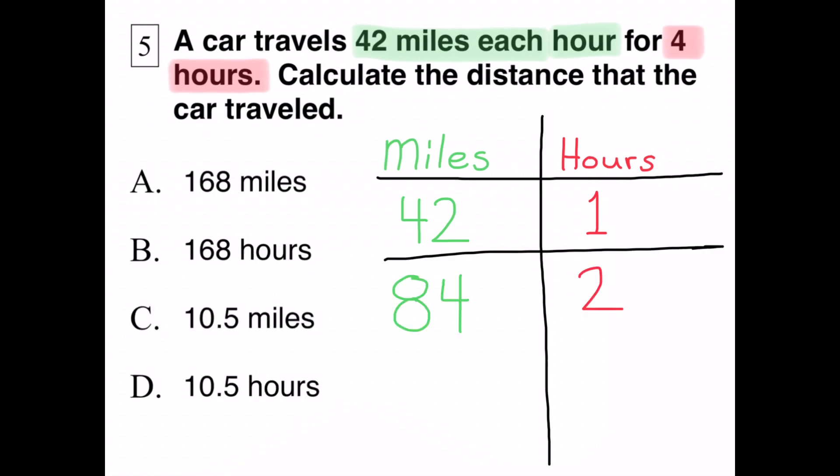If the car travels 42 miles in one hour, then it would travel twice that far in two hours. In two hours, the car travels 84 miles.